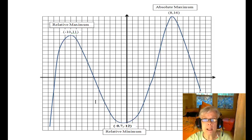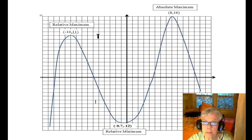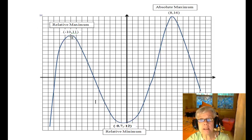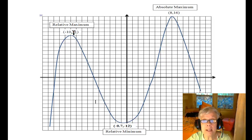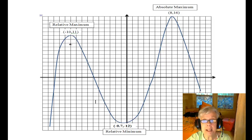In its own little neighborhood, this point right here is the highest point. It's not the very highest point on the graph — this is. But in its own little neighborhood, this is the biggest bully on the block. We call it a relative maximum because over here it's the highest point. The relative maximum is 11 and it occurs at x equals negative 10.